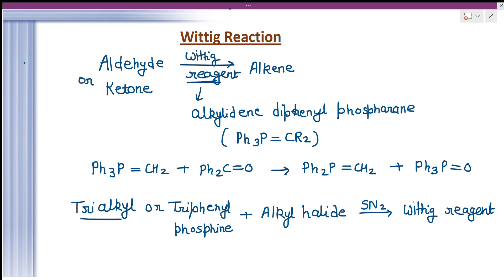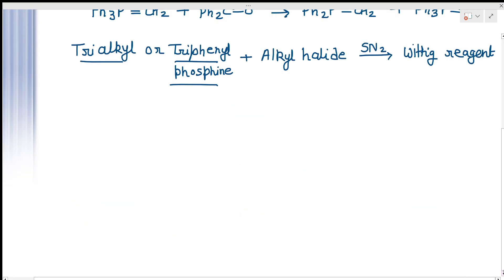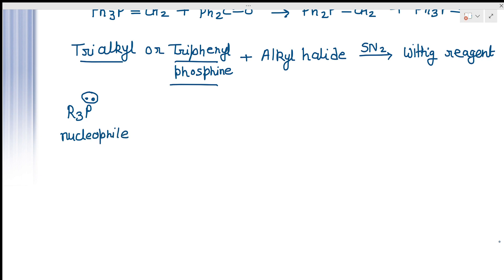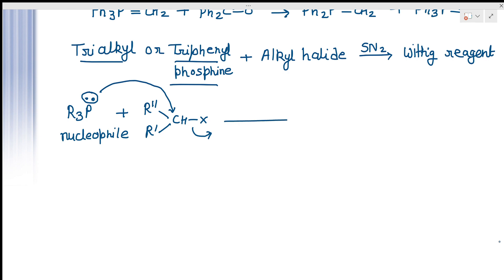Trialkyl or triphenylphosphine is a good nucleophile and acts as a weak base, so it can react with a primary or secondary alkyl halide by the SN2 mechanism. The phosphine has a lone pair of electrons and acts as the nucleophile. This lone pair attacks the carbon of the alkyl halide — suppose a secondary one — while the halide group leaves. This is the SN2 mechanism. As a result, we get R₃P⁺–CHR'R''.